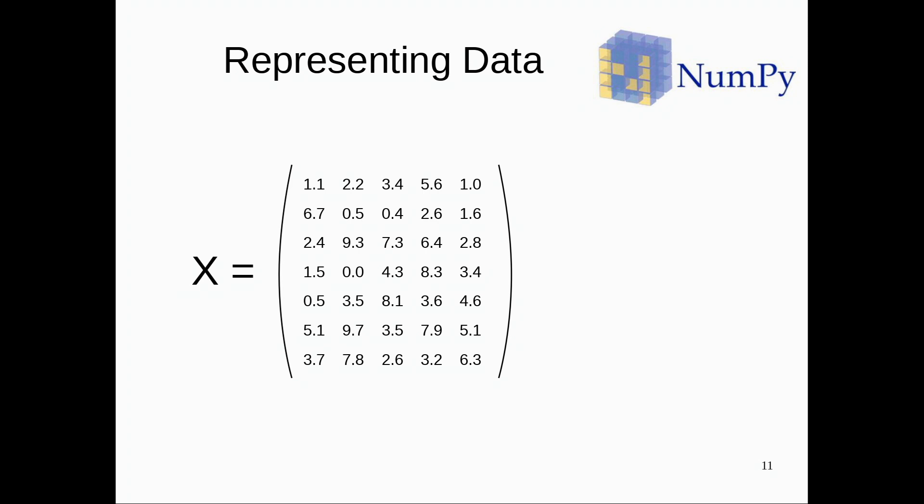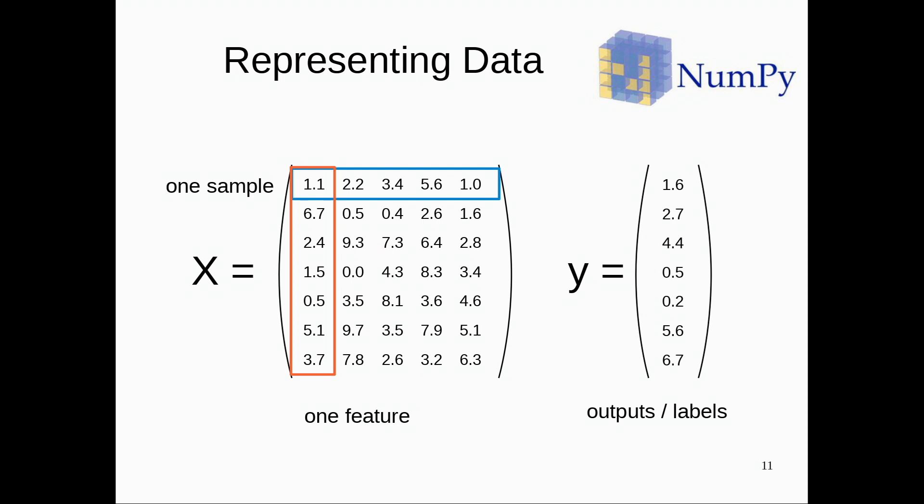So first, basic API. Scikit-learn works on NumPy arrays. NumPy arrays are homogeneous arrays, so that means they have one data type, quite different from data frames. And we assume that our input data is some float matrix X where each row corresponds to one sample and each column corresponds to one feature or one independent variable. And we have a separate array. If we do classification or regression, that would be outputs or labels. So we have two different objects, one for data, one for the targets.